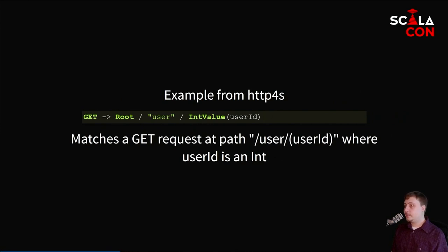Here's a quick example from HTTP4S which shows the routing DSL. What's happening here is this is how you describe matching on a path. In this case, we are matching a GET request at the path /user/:userID, where the user ID is any integer. This will be passed to whatever function you have that generates your request. What makes this a DSL is that it allows you to use custom syntax to more accurately and succinctly represent the concept of matching on a path.